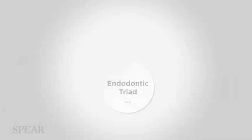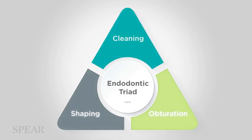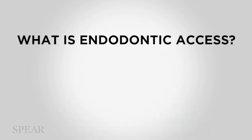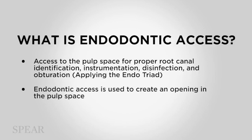Endodontic access is the means by which we implement the endodontic triad. The endodontic triad is instrumentation, obturation, and disinfection — clean, shape, and obturate. That basic endo triad needs to be implemented, and in order to do that, you need to get inside the pulp space. So endodontic access is the means by which we create an opening into that space in order to implement the endodontic triad.